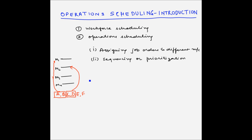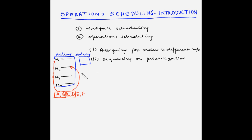The third activity is planning the route of movement of material from one department to another during processing. For example, M1, M2, M3, and M4 are in the milling department. Once jobs pass through the milling department, they may have to go to other departments like drilling, grinding, or packing. This is called routing — determining which departments these jobs will flow through.